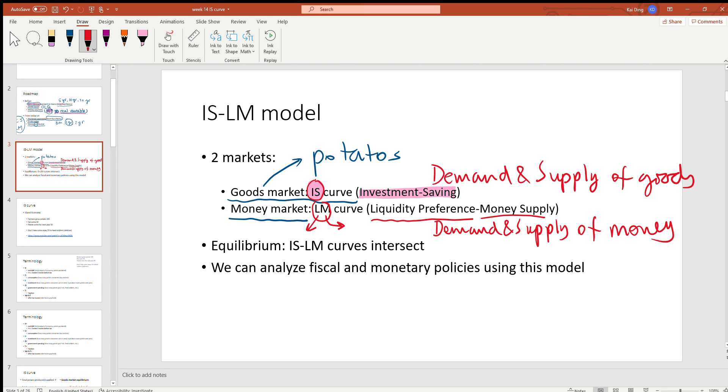The overall equilibrium is where IS, which represents the goods market, and LM curve, which represents the money or financial markets, intersect with each other. And the IS-LM framework is a very convenient framework to analyze fiscal and monetary policy. You can even combine different fiscal and different monetary policy to see what's the combined effect.